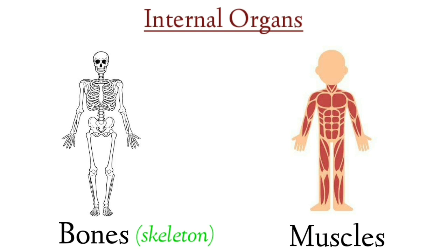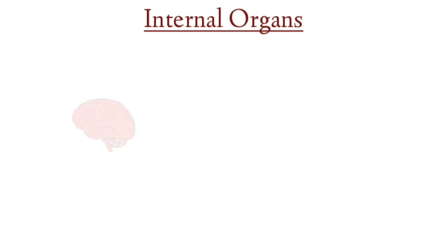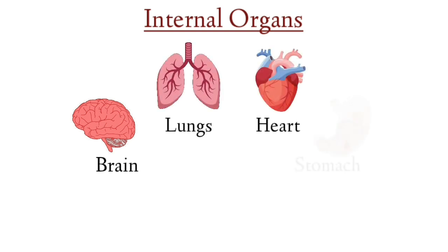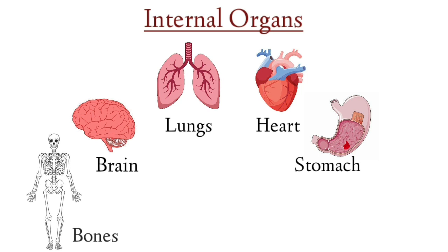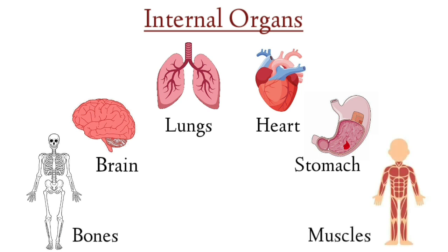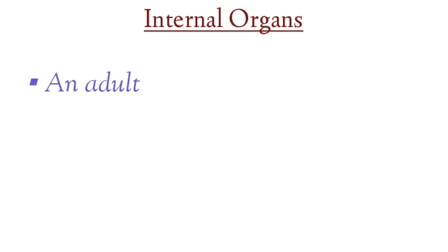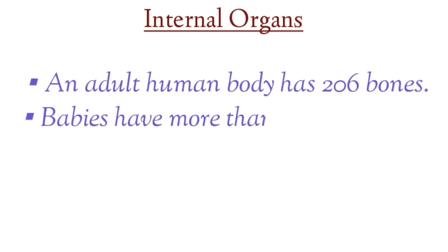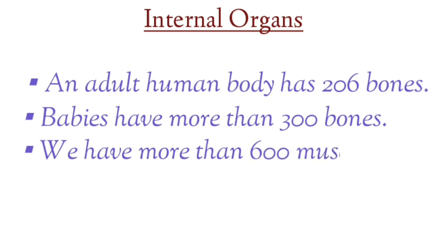All right now children, tell me what are the different internal organs. Brain, lungs, heart, stomach, bones, and muscles. They are inside our body and therefore we cannot see them. Did you know an adult human body has 206 bones? Babies have more than 300 bones, and we have more than 600 muscles.